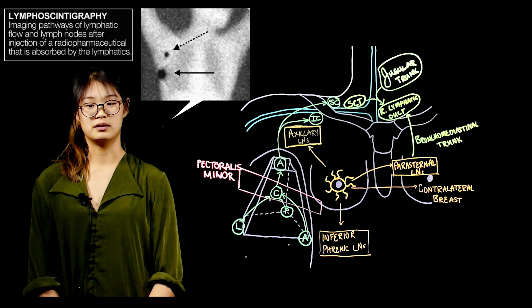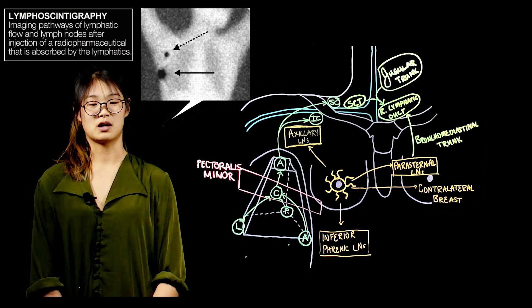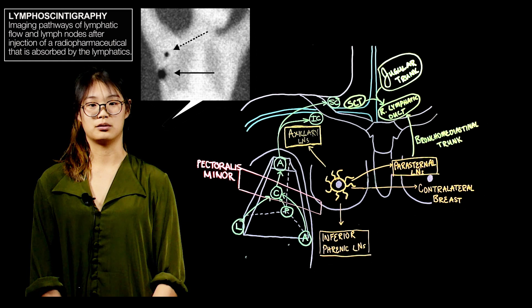This is the sentinel node. A surgeon then removes the lymph node and it's sent to a pathology lab for further investigation. Most commonly the node is in the upper lateral quadrant of the breast.